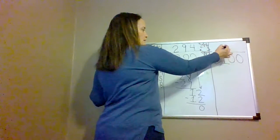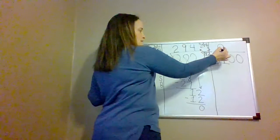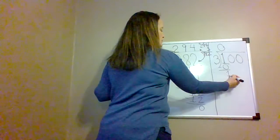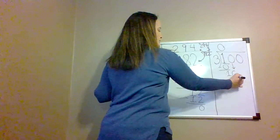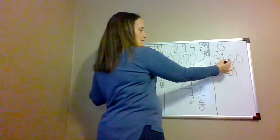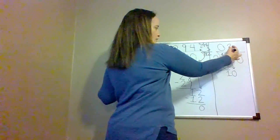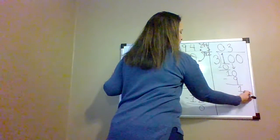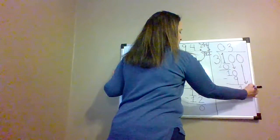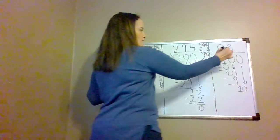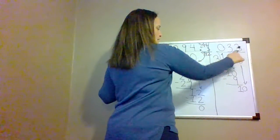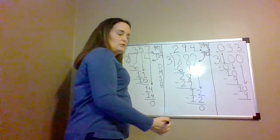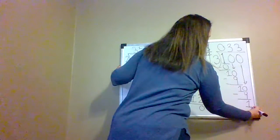The next problem: 1 divided by 3 is 0. 3 times 0 is 0. We subtract: 1 take away 0 equals 1. We bring down. 10 divided by 3 equals 3. 3 times 3 equals 9. We subtract and get 1. We bring down the 0. 10 divided by 3 equals 3. 3 times 3 equals 9. 10 take away 9 equals 1.